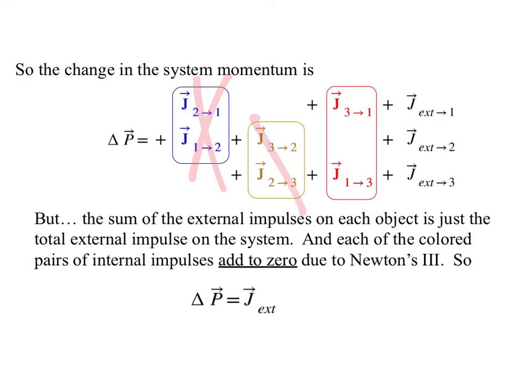But then the same argument works for this one, and the same argument works for this one. And then we look at this and we say, well, these things together, the sum of the external impulses on one and on two and on three, is really just the sum of all the external impulses. So we end up with that the change in system momentum is equal to the impulse done by external forces, and that the internal forces do not contribute to a change in momentum.